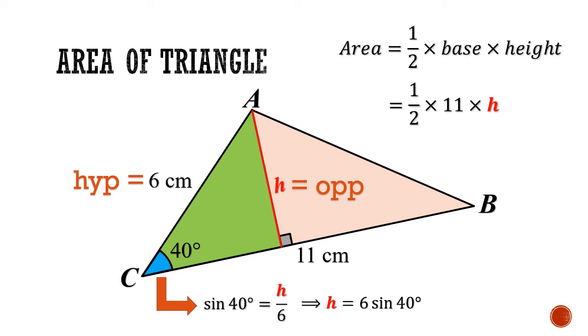Next, we can substitute H equals 6 sin 40 degrees, and evaluate the area to be 21.2 cm squared.